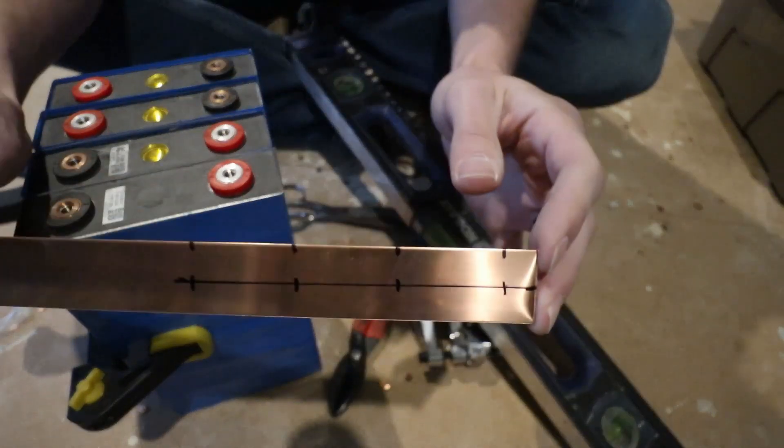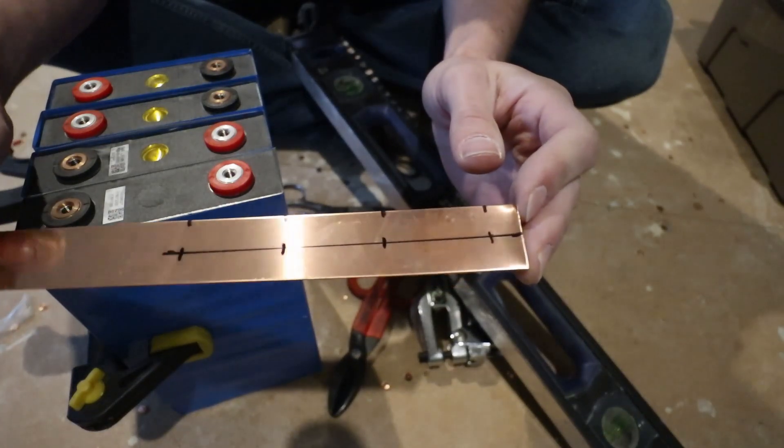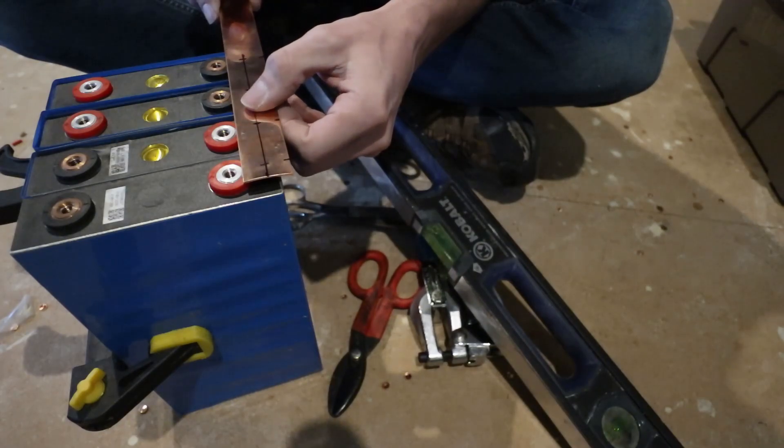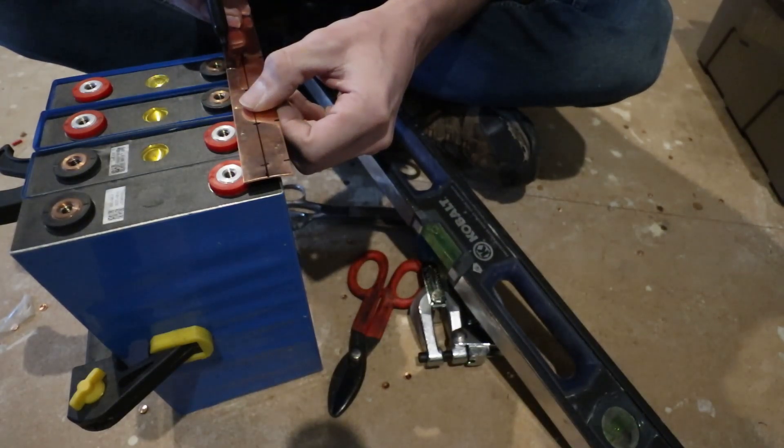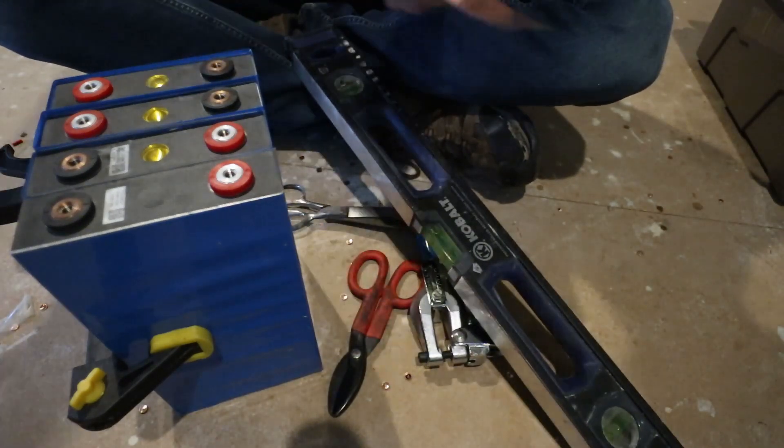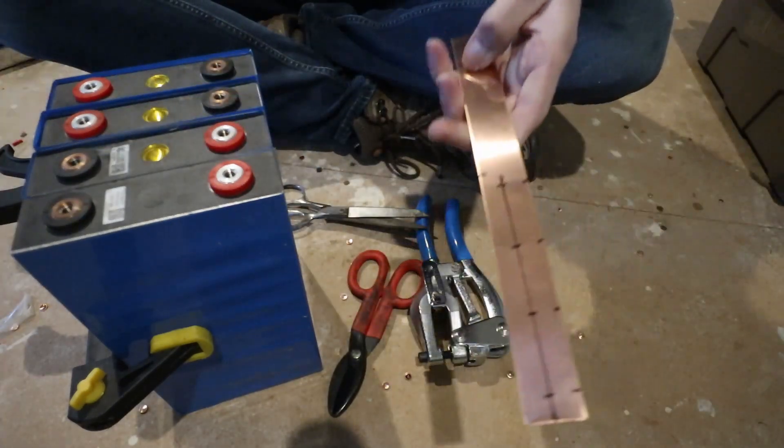So now I've got my four locations to punch. The other thing I need to measure is how long this bus bar needs to be. Just going to be about there. So let's go ahead and cut the bus bar to length, and then we'll get it punched.